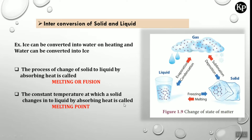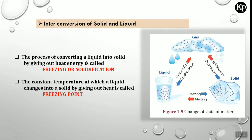The constant temperature at which a solid changes into liquid by absorbing heat is called the melting point. The process of converting liquid into solid by giving out heat energy is called freezing or solidification. If we decrease the temperature, heat energy is given out and the liquid converts to solid — that process is called freezing or solidification.